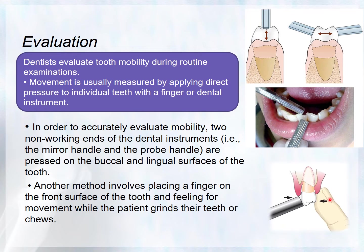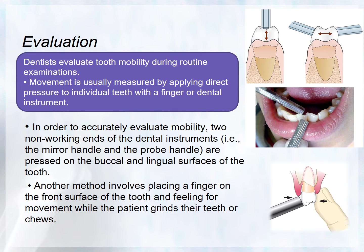Another method is to place a finger on the facial surface of the tooth and feel for movement while the patient grinds their teeth or bites down. You can use one finger on one side and an instrument on the other. For vertical movement, one handle of an instrument can be used. This is how tooth mobility is evaluated clinically.